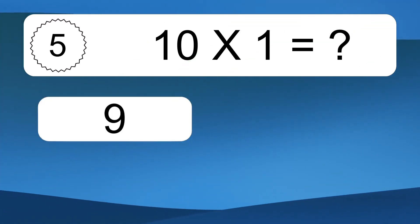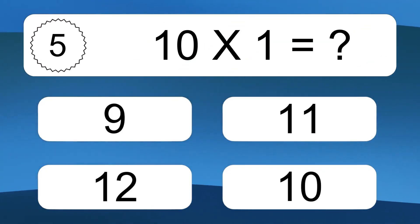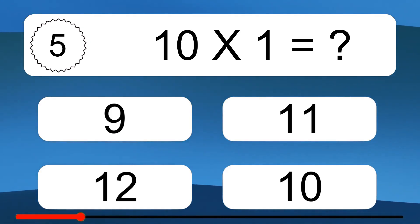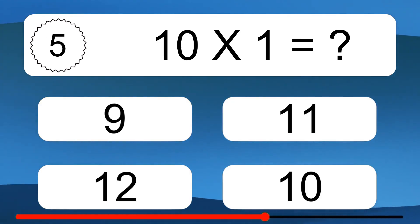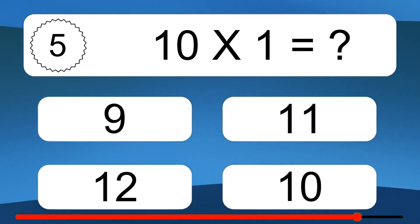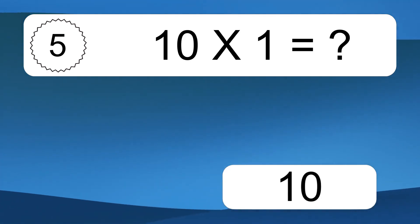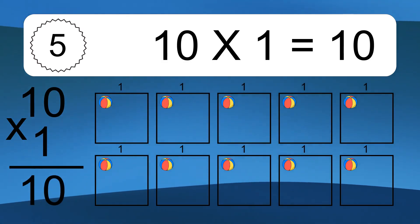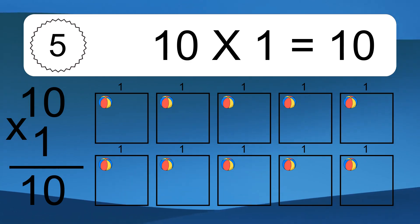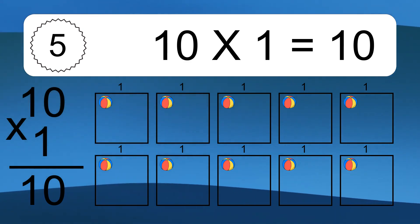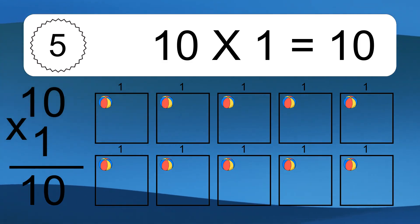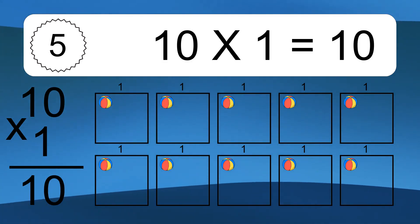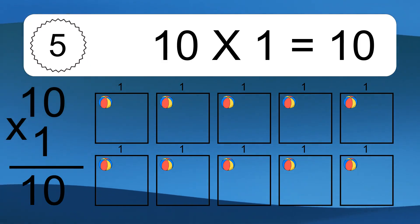10 times 1 equals what? 10 times 1 equals 10. We have 10 boxes, and each box has 1 colorful ball inside. If you count all the balls in all the boxes together, you will have 10 times 1 balls. This equals 10 balls.